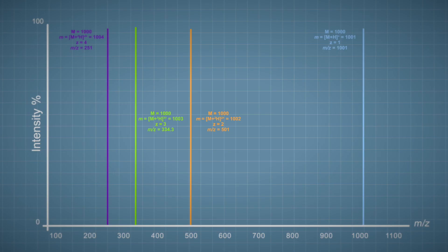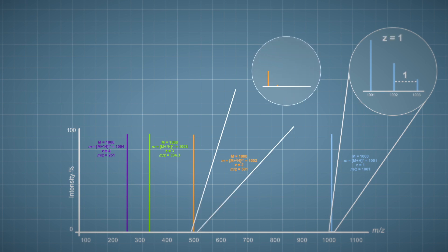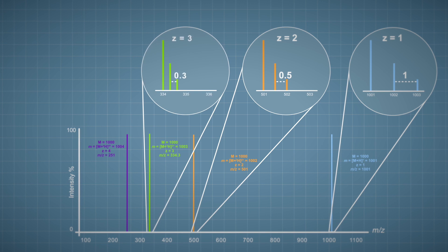Here the single charge isotope cluster has a gap of one unit between adjacent ions. The isotope cluster for the same molecule with a double charge has a gap of half a unit between the adjacent ions. And for an isotope cluster with triple charge the gap is 0.33.